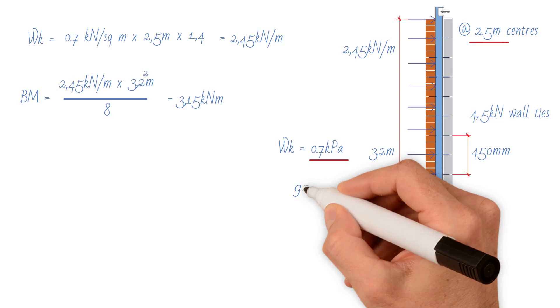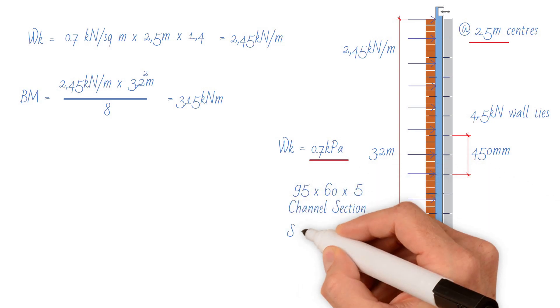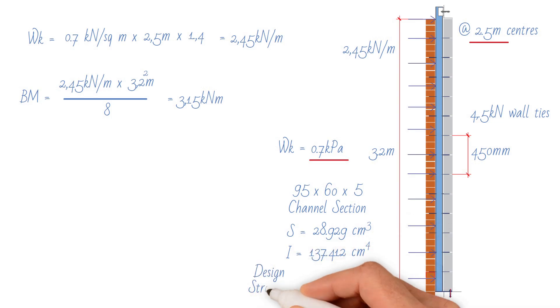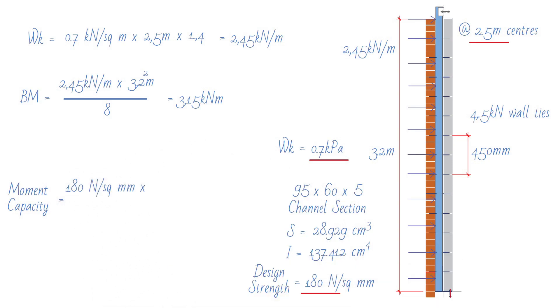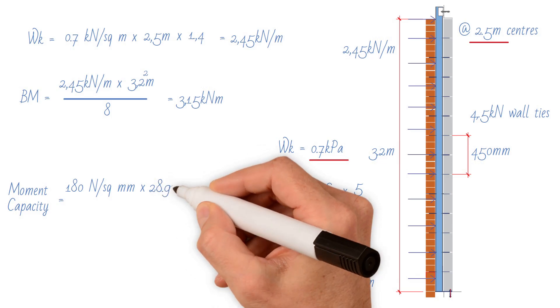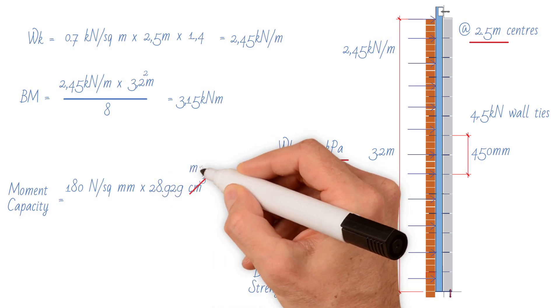If we try 95 by 60 by 5 channel section windpost with the following properties, the bending moment capacity would be design strength 180 newton per square millimeter times section modulus 28.929 cubic centimeter. We need to convert this to millimeter, so 28.929 times 1000.